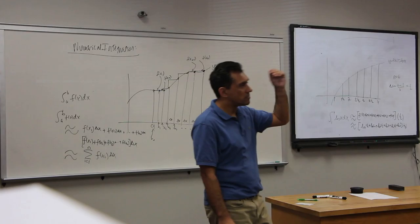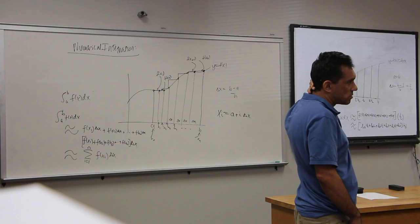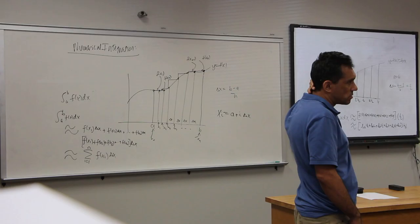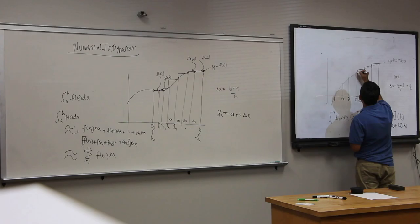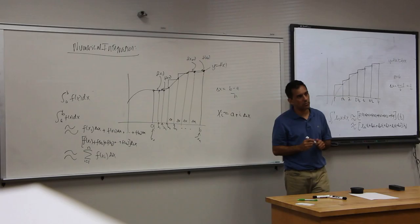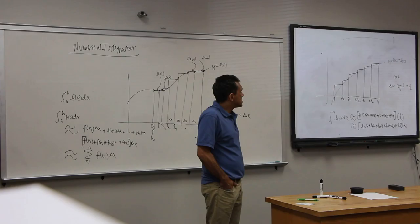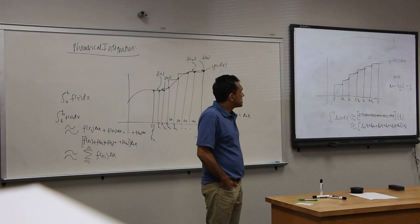Now, you could certainly partition it and say, well, why, Dr. J, are you taking the height there? Because, Dr. J, you're going to overshoot. You're going to overshoot. You're going to need more than it's actually there. You could say, well, why don't you look at each partition and take the height from the left?